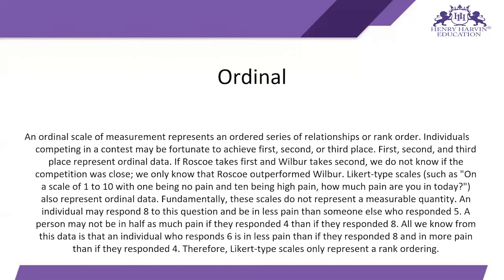Next, the ordinal scale of measurement represents an ordered series of relationships or rank order. For example, in a race, the person who comes in first place is ranked first, the second person is ranked second, then third. When we scale those persons according to their race position, we are using the ordinal scale of measurement to represent those persons in the format of numbers.